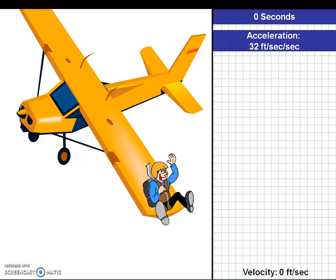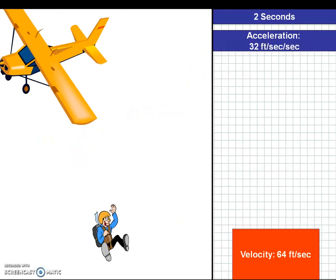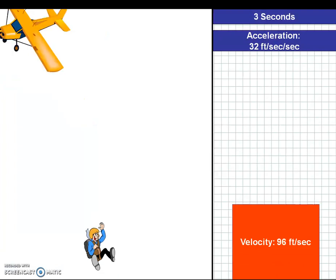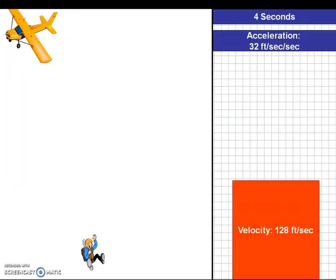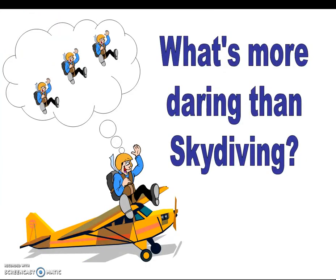Let's look at if somebody jumps off an airplane and goes skydiving — how far would they go? We're going to be using English units because we're engineers. After your first second, you'll travel 32 feet. After your second second, you're going to go an additional 32, for a total of 64. Then 96, then 128, then 160, then 192. So you're going to exponentially get faster and faster as you fall closer and closer — and again, that's assuming no air friction.